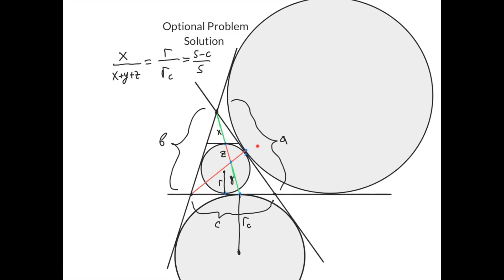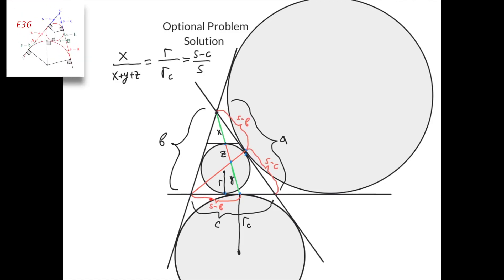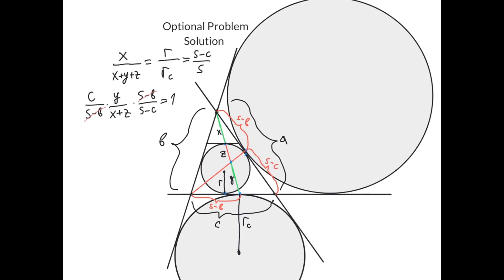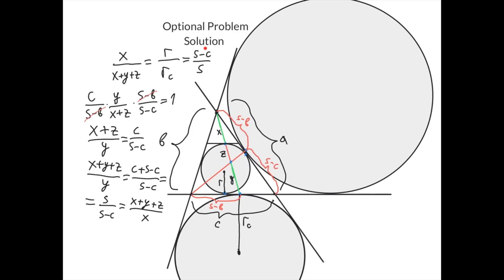Returning back, let's call this side a, this side b, and this side c. Then this distance is s-b, this distance is also s-b (the distance to the tangency point of the excircle with this side), and this distance is s-c. Applying Menelaus' theorem for this triangle and these three collinear points, we get c/(s-b) times y/(x+z) times (s-b)/(s-c) = 1. Canceling s-b and rewriting: (x+z)/y = c/(s-c). Adding 1 to both sides: (x+y+z)/y = s/(s-c). But we also know s/(s-c) = (x+y+z)/x, so x+y+z cancels and we get y = x, as desired.